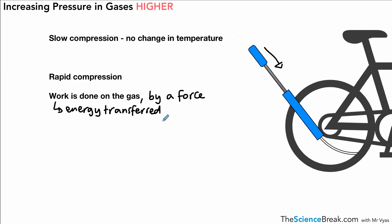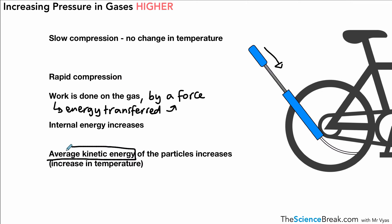The internal energy of the gas increases, which increases the average kinetic energy of the particles. The average kinetic energy of particles in a substance is the temperature. So if we increase average kinetic energy, we increase temperature. Rapid compression causes a temperature increase due to work done by the force on the gas.